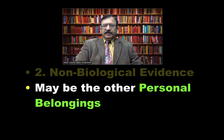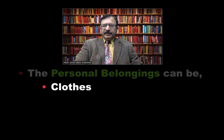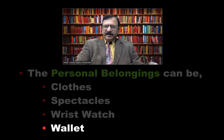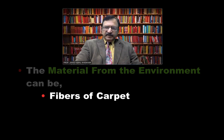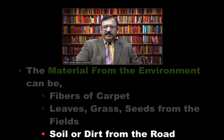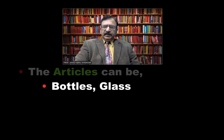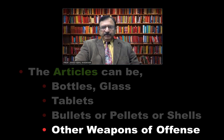Non-biological evidence may be either personal belongings or material from the environment. Personal belongings can include clothes, spectacles, wristwatch, wallet, ID card, pen, or a handkerchief left at the scene belonging to some individual. Material from the environment can include fibres from a carpet, leaves, grass, seeds, soil, or dirt from the road. Other articles that can be found include bottles, glass, tablets, bullets, pellets, shells, or the weapon of offence.